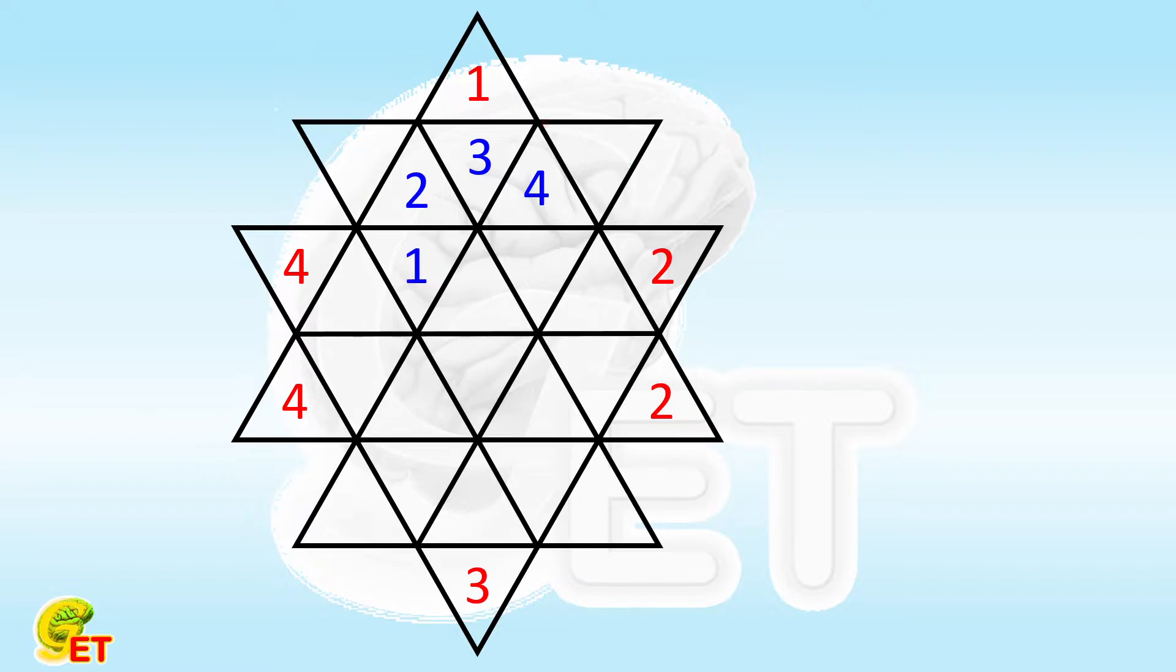Next, let's look at here. There are 3 and 4 in this triangle, and there is already 2 in this triangle. So this position can only be arranged with 1 as well. In this case, 1 appears in this triangle twice. Failed.